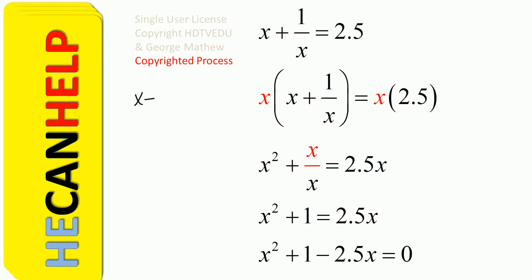So x plus 1 over x is equal to 2.5. Multiply both left and right sides by x, and we get x times x plus 1 over x is equal to x times 2.5. x times x is x squared, x times 1 over x is x over x, and that is equal to 2.5x. So you get x squared plus 1 is equal to 2.5x.